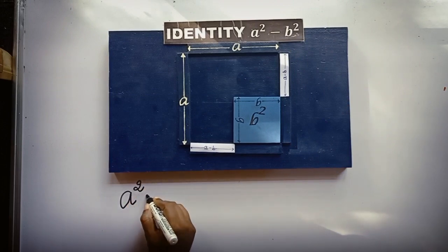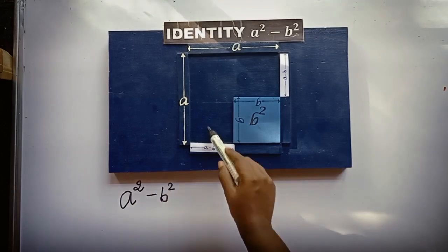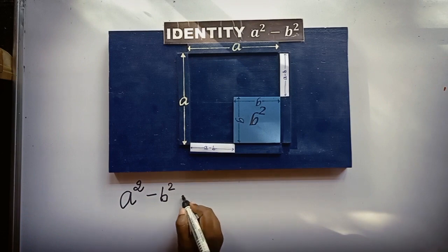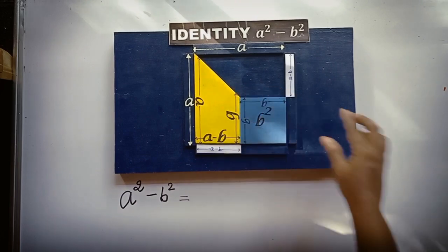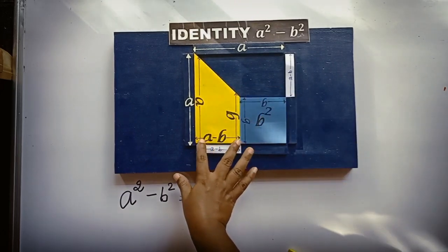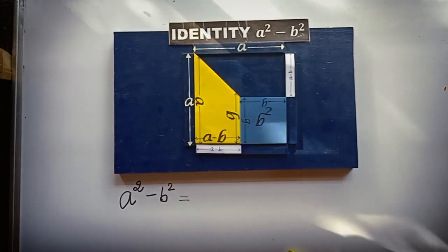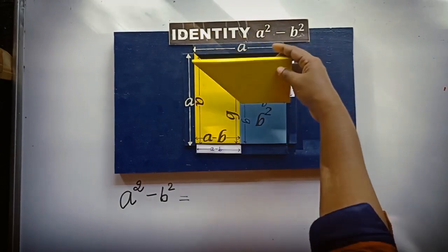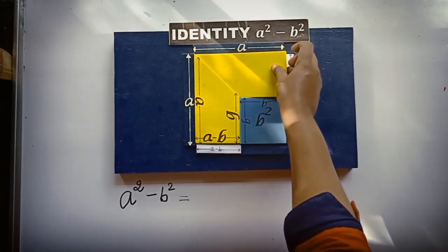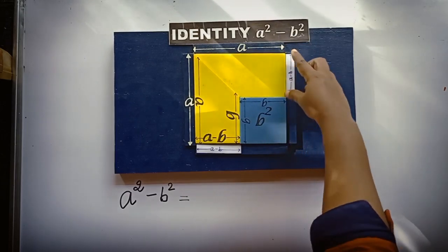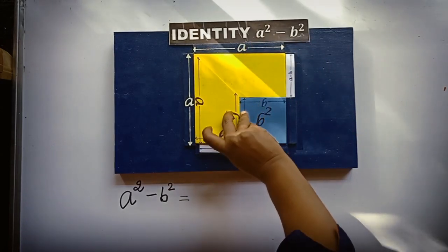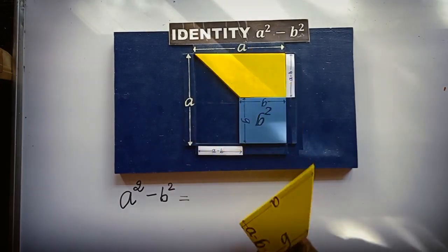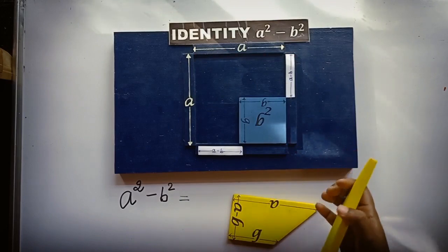Now you have to find A square minus B square. A square minus B square is equal to the remaining area. Now fill this area with two pieces. This piece is of length A minus B and A.